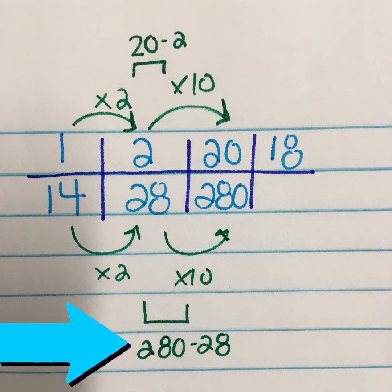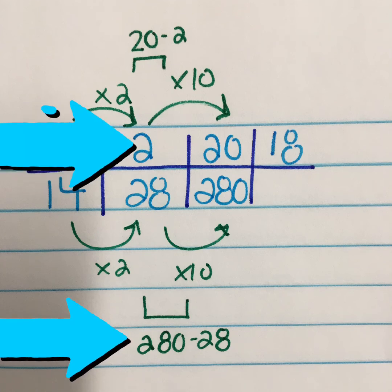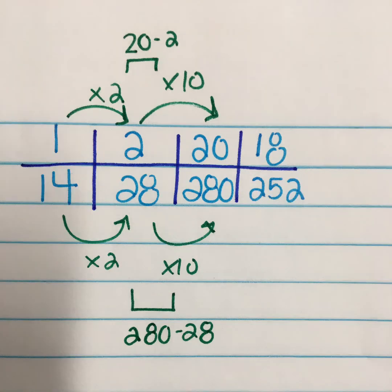So if I subtracted 280 from 28, I also need to subtract 20 minus 2, which is 18. And that brings me to my results. 14 times 18 is 252. Or 252 divided by 14 is 18. I told you this would be easy. Or maybe I didn't tell you. But it is, isn't it?